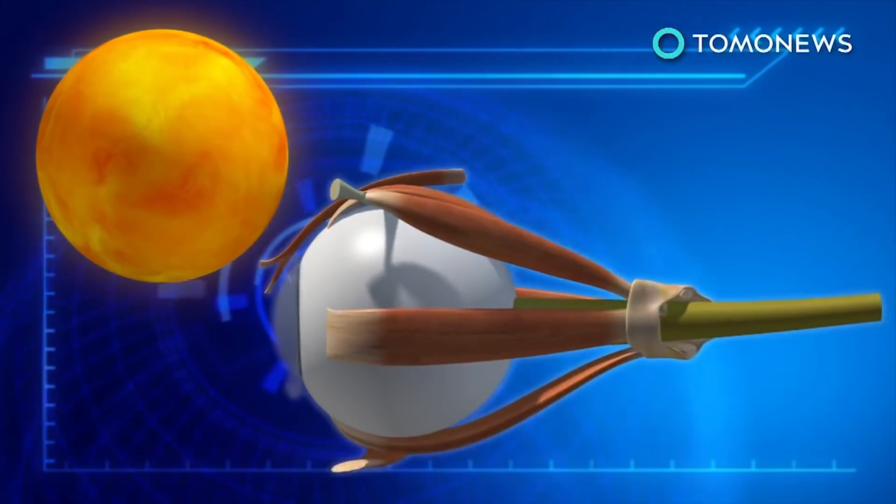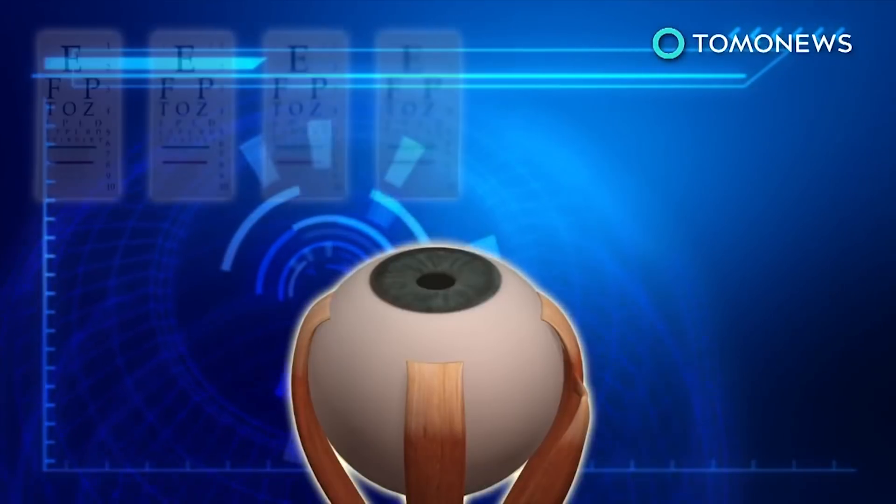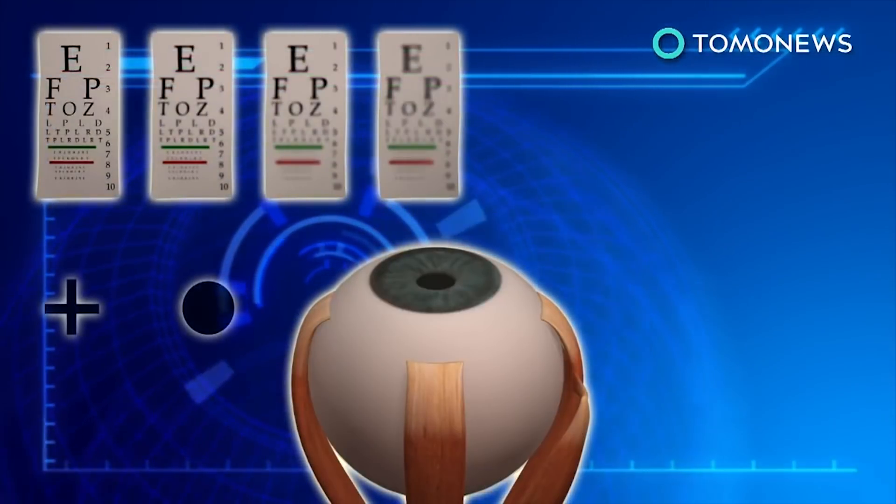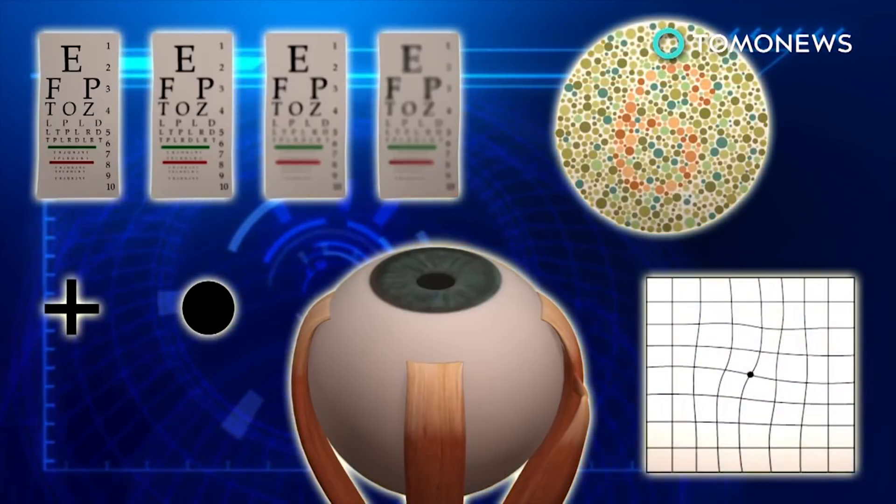Staring directly at the sun during an eclipse can cause solar retinopathy. Symptoms of solar retinopathy include loss of visual sharpness, blind spots, changes in color vision, or distortion when looking at straight lines or grids.